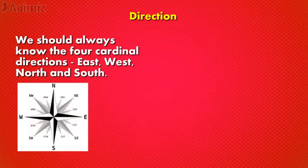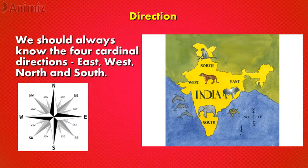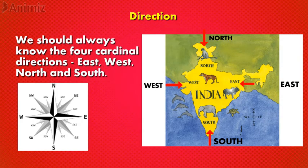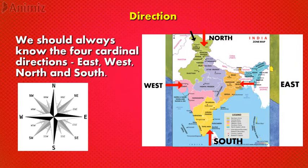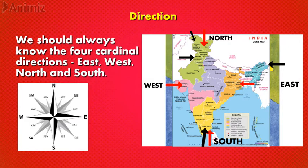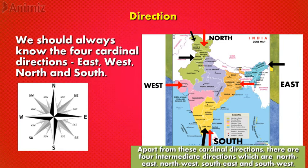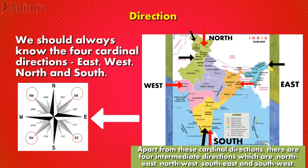The next element is direction. We should always know the four cardinal directions: east, west, north, and south. Looking at this map of India, north is at the top, south is at the bottom, east is to the right, and west is to the left. For example, Jammu and Kashmir is in the north, Punjab is in the west, Assam is in the east, and Tamil Nadu is in the south. Apart from these cardinal directions, there are four intermediate directions: north-east, north-west, south-east, and south-west.